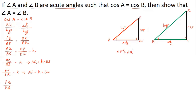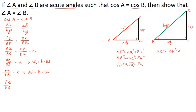In triangle AQP, AP squared is equal to AQ squared plus PQ squared. That is, AP squared minus AQ squared equals PQ squared, so PQ is equal to the square root of AP squared minus AQ squared. In the same way, in triangle BSR, BR squared equals BS squared plus SR squared, so BR squared minus BS squared equals RS squared.